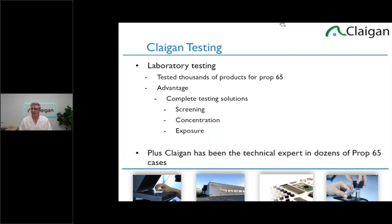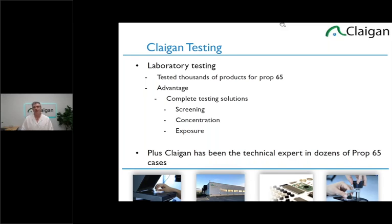We do a lot of laboratory testing, especially Prop 65. We've tested tens of thousands of products for Prop 65 and we very much know what we're doing. We have some significant advantages — partially our screening technology. One of the problems with testing is if you test every material for everything to the nth degree, it becomes a geometric effort and cost problem. However, in most cases you can screen out most of the high-risk substances with very simple methods. It takes a lot of practice and validation, but once you have it, everybody gets the benefit.